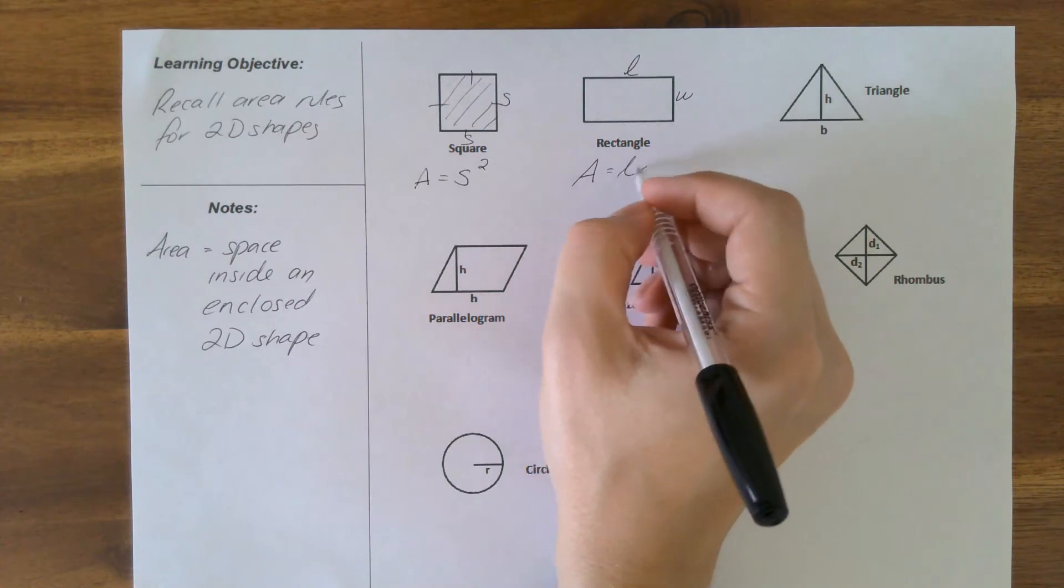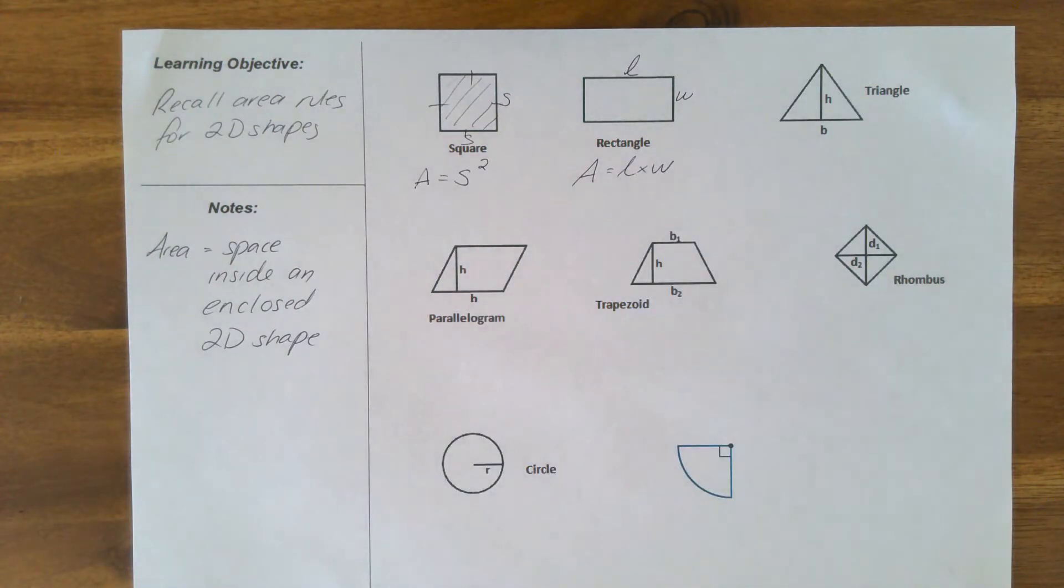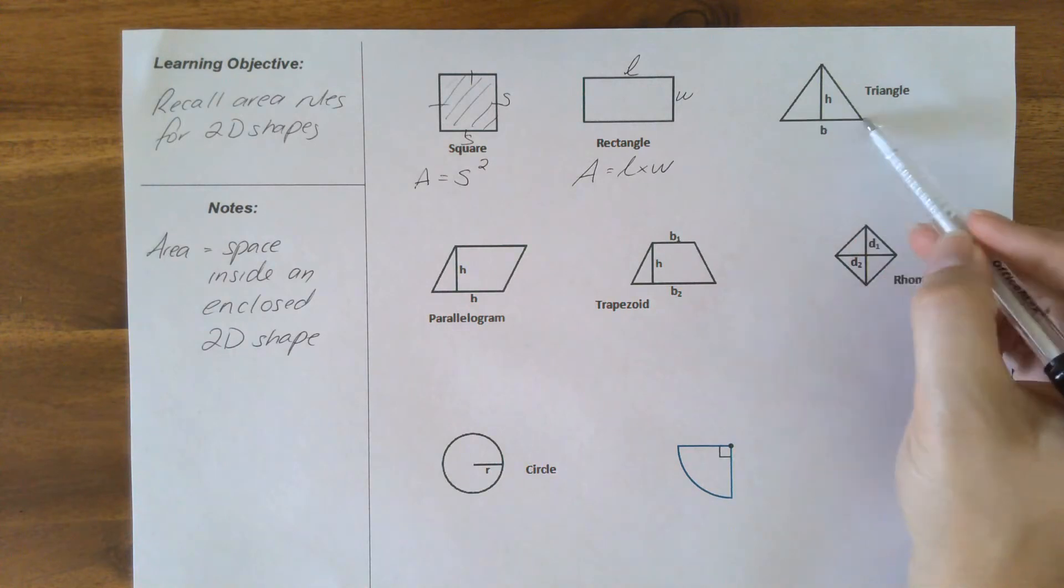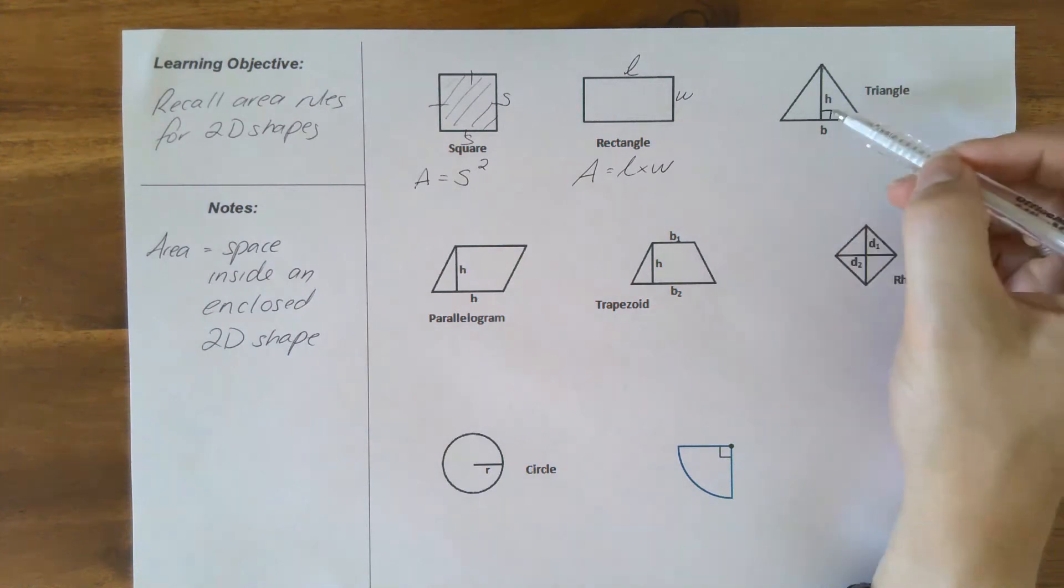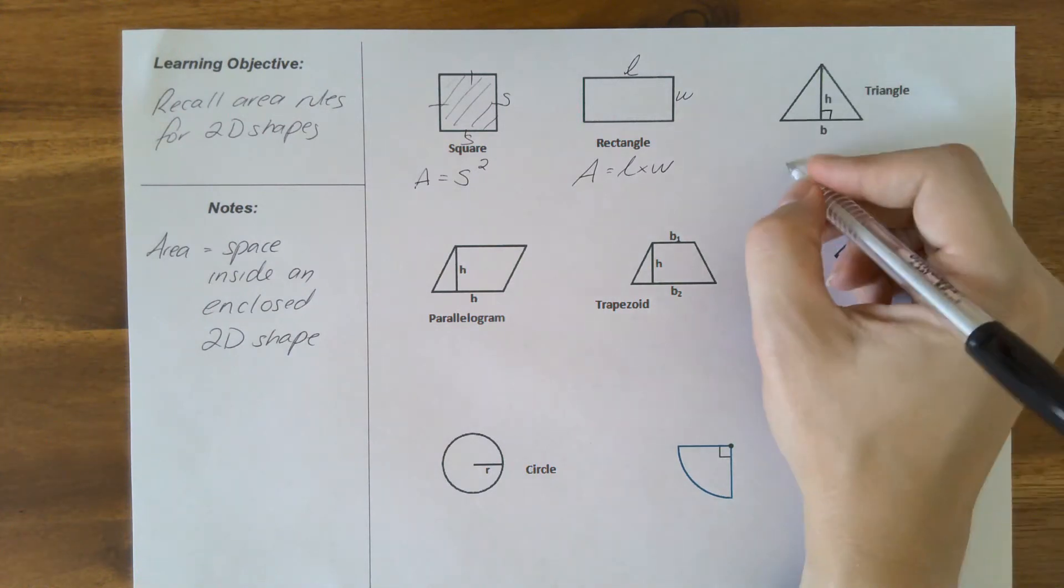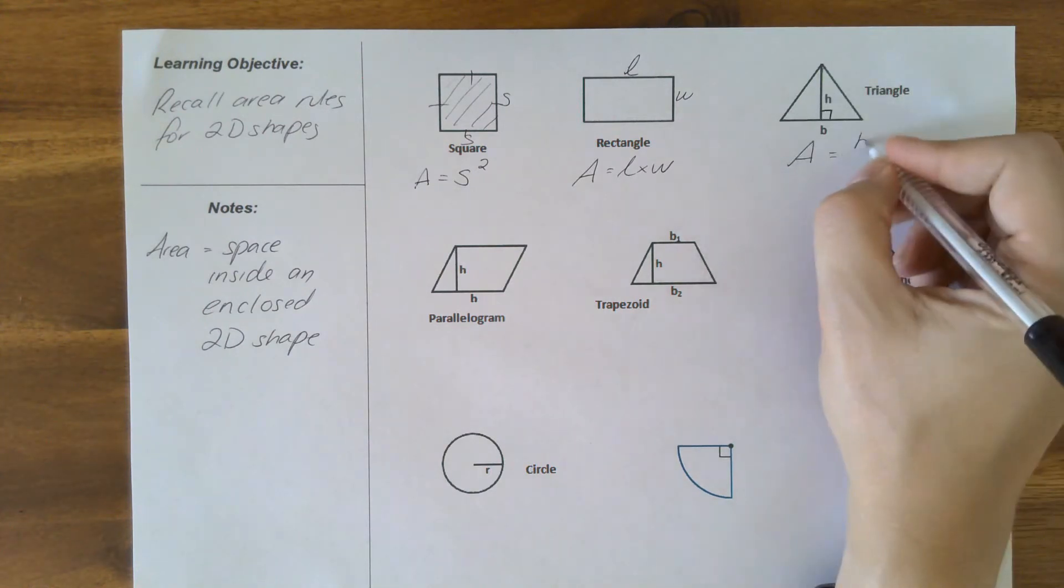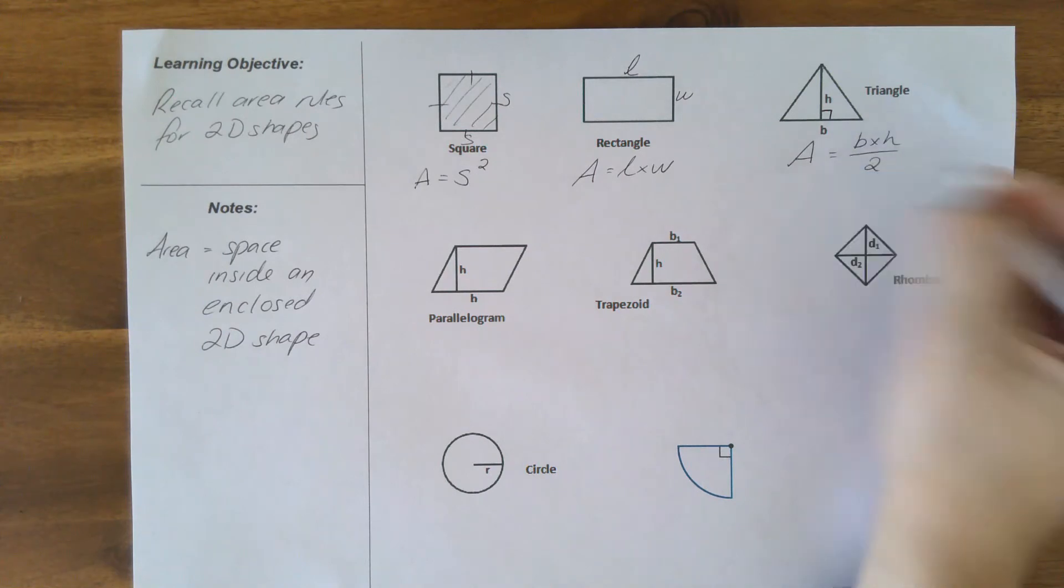And our triangle, the information we have is our b for base and h for perpendicular height. This is the height that runs at a right angle to the base. So our area for this one is going to be base times height divided by 2. And I imagine in your younger years you would have seen how all of these rules have come about.